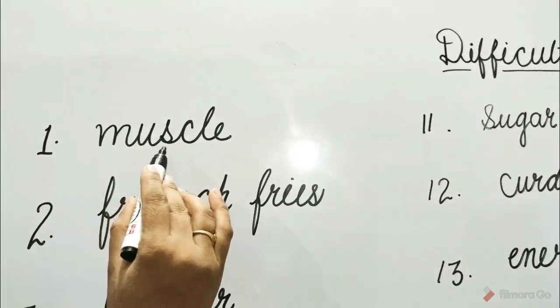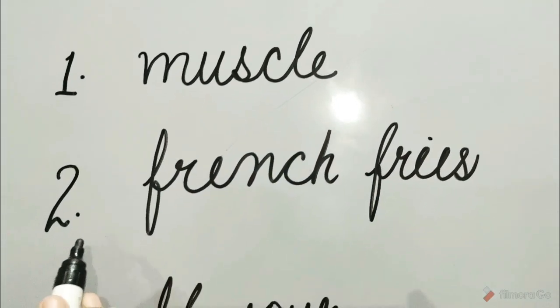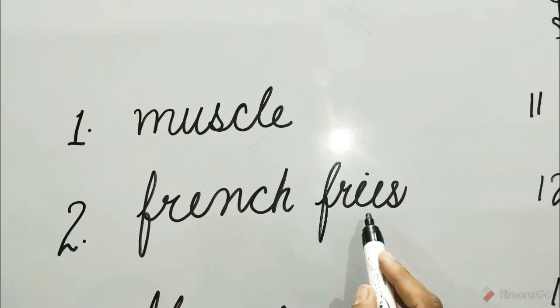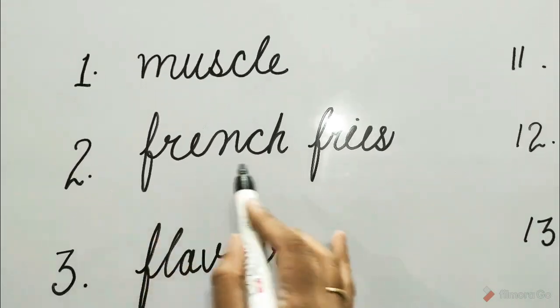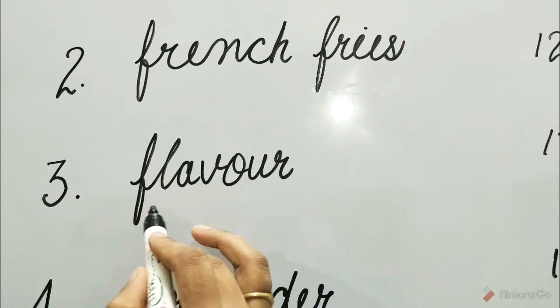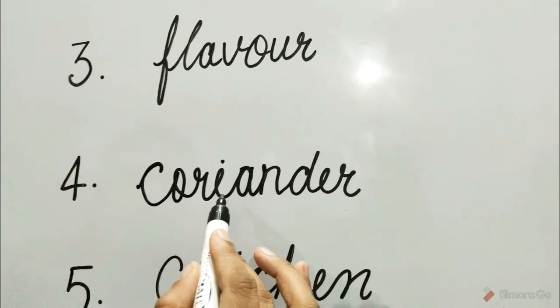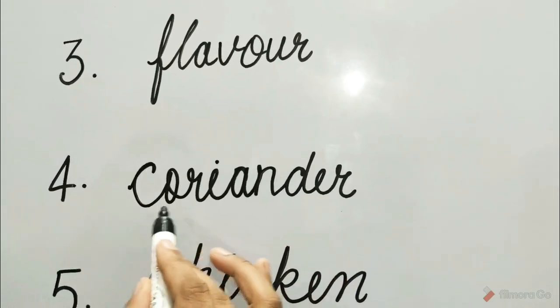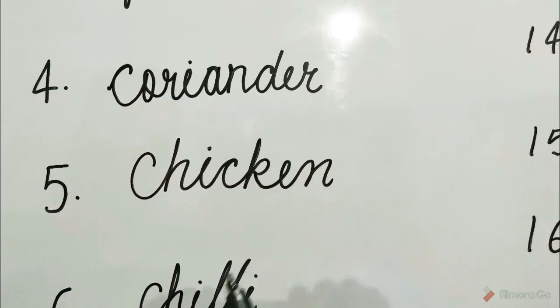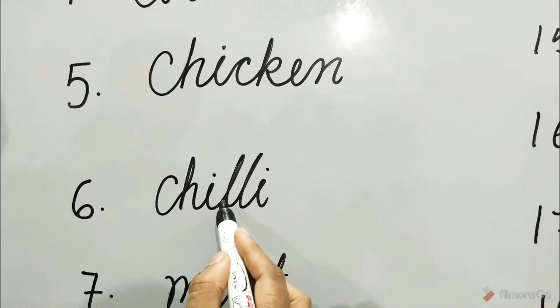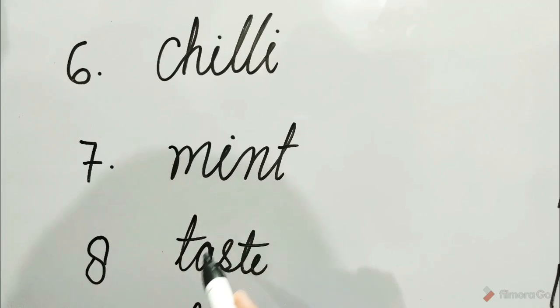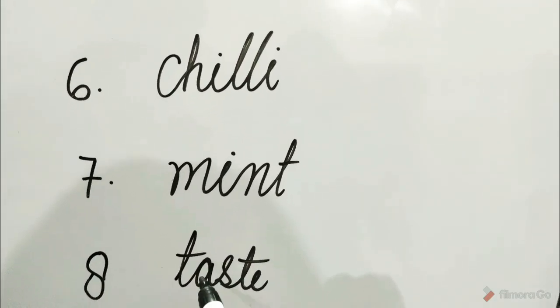M-U-S-C-L-E Muscle, F-R-E-N-C-H F-R-I-E-S French Fries, F-L-A-V-O-U-R Flavor, C-O-R-I-A-N-D-E-R Coriander, C-H-I-C-K-E-N Chicken, C-H-I-L-L-I Chili, M-I-N-T Mint, T-A-S-T-E Taste.